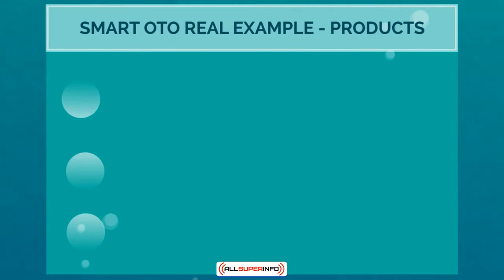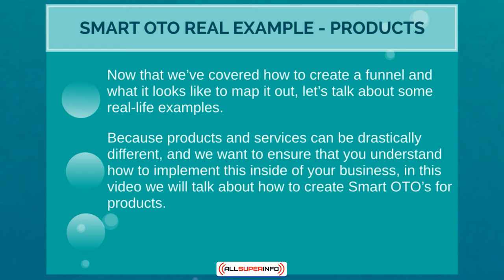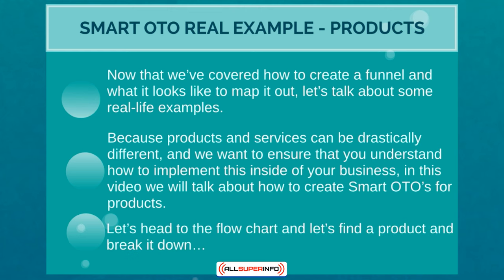Hello and welcome to video number six — this is Smart OTO Real Example, in relation to products. Now that we've covered how to create a funnel and what it looks like to map it out, let's talk about some real life examples. Because products and services can be drastically different, we want to ensure you understand how to implement this inside your business. This video covers how to create smart one-time offers for products. If you have a service-only business, you can skip to the next video, though you might learn a few things here.